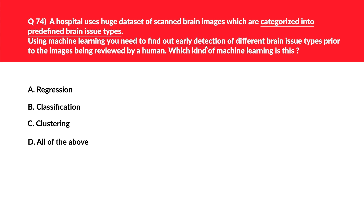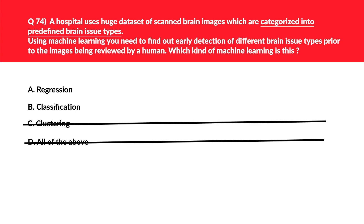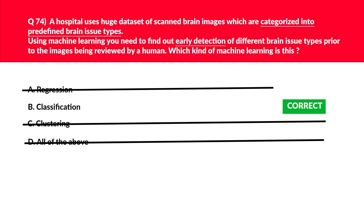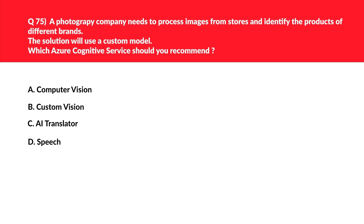The keyword here is 'early detection' — we need to forecast or predict different brain issue types. As before, C and D are eliminated, leaving regression and classification. Since the question is looking for a non-numerical value — categorizing different brain issue types — regression is out, and classification is the correct answer.